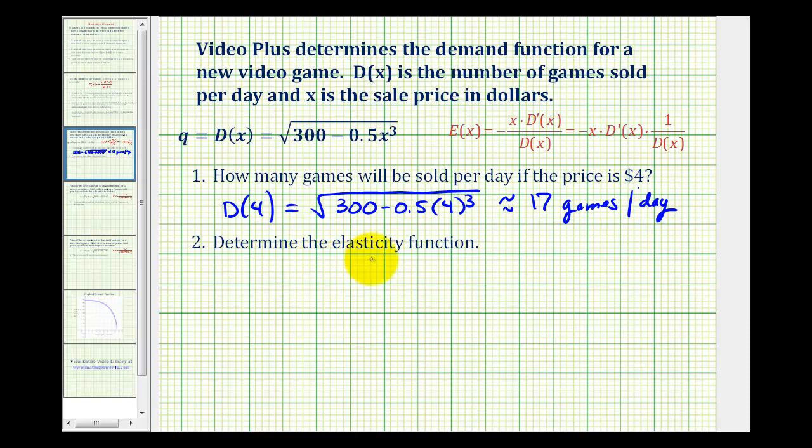Number two, we want to determine the elasticity function given by this equation here. And notice how I wrote it in two different forms. Let's start by writing our demand function in rational exponent form. So we could write this as 300 minus 0.5 x to the third raised to the 1 half power.